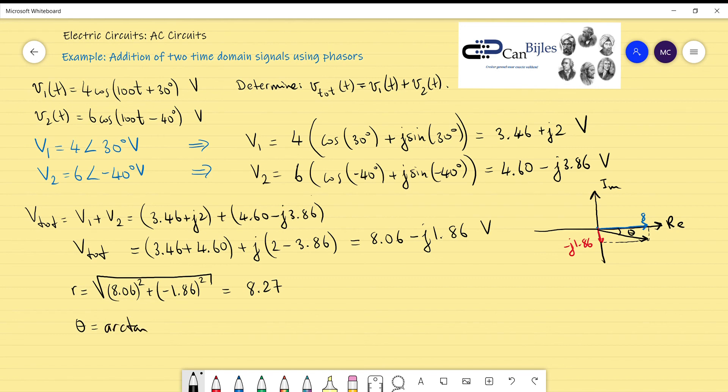That will mean the arc tangent of minus 1.86 divided by 8.06, and it will be equal to almost minus 30 degrees.